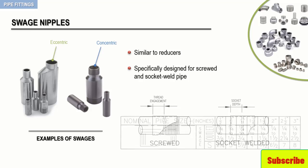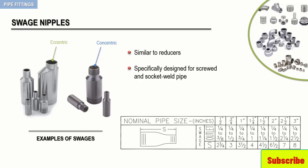The following figure shows varying lengths and sizes of swage nipples. Keep in mind, swages are unique in that they can be used in screwed, socket weld, or butt weld configurations. When used in these configurations, swages will have a variety of different end preparations. These end preparation combinations allow the swage to be used in a number of different attachment applications.